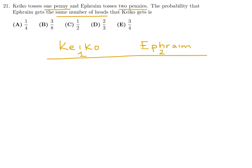When Kiko tosses his penny, it can be either heads or tails — those are the only possible results. Now Ephraim tosses two pennies, so he's got a little bit more in terms of results. Let's make a table of all the possibilities, all the possible combinations.